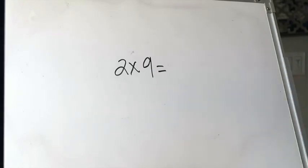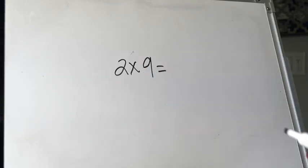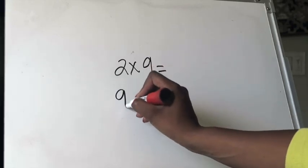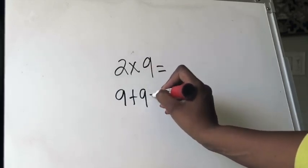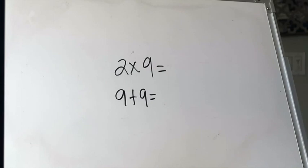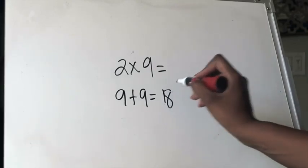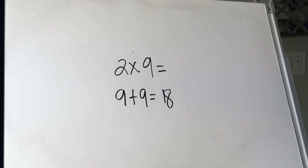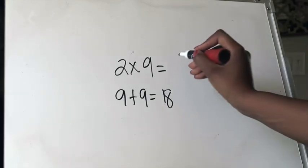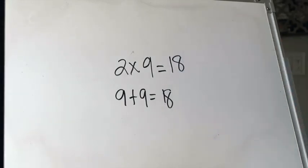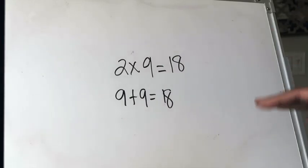Even though the second factor is bigger, two times nine is the same as telling myself to double nine, or add nine to itself two times. So I'm going to do nine plus nine. That should feel like a review problem. Nine plus nine is 18. Therefore, the product of two times nine is 18. Those are two quick examples using the double strategy with our facts of two.